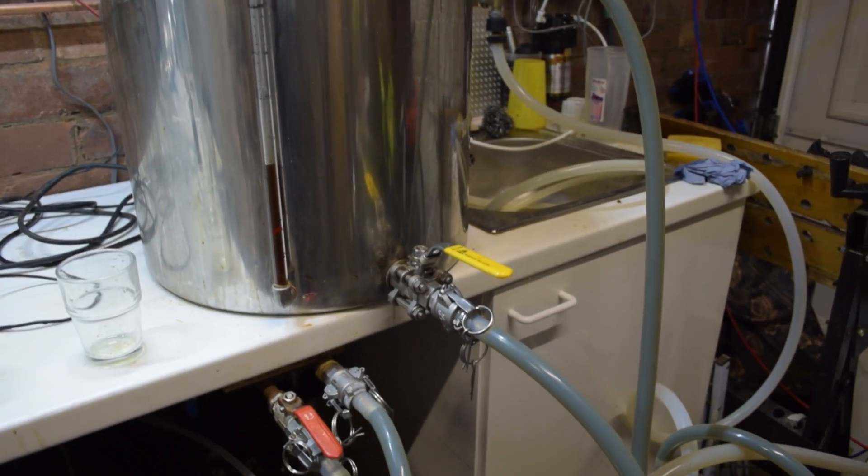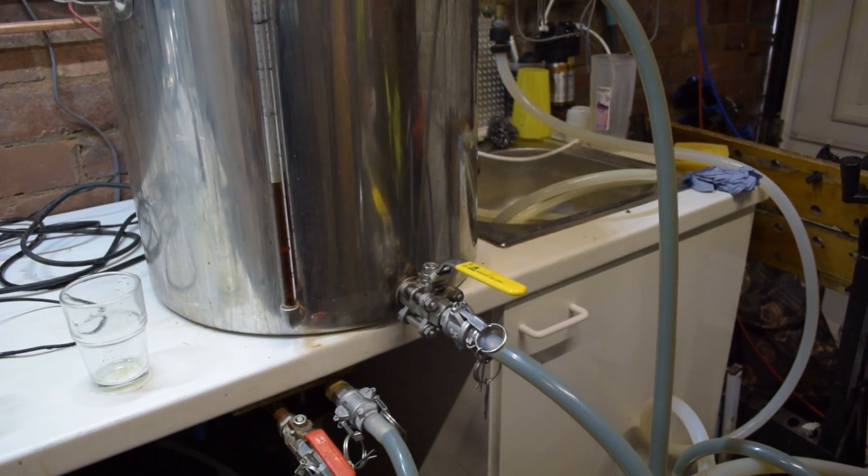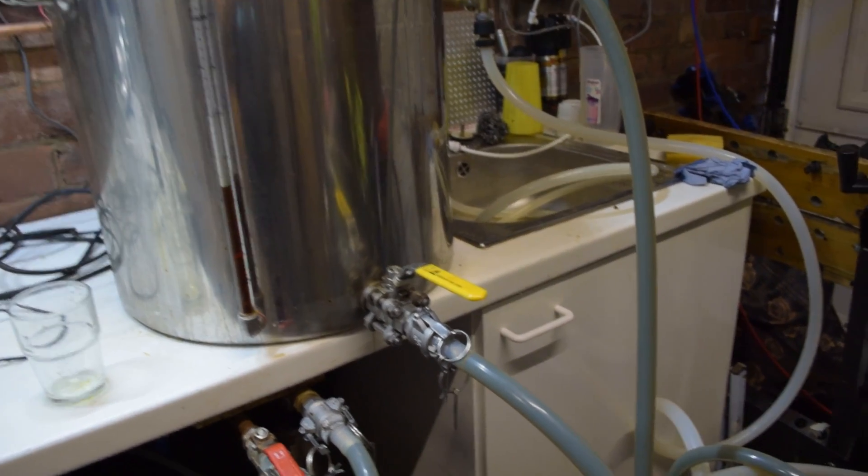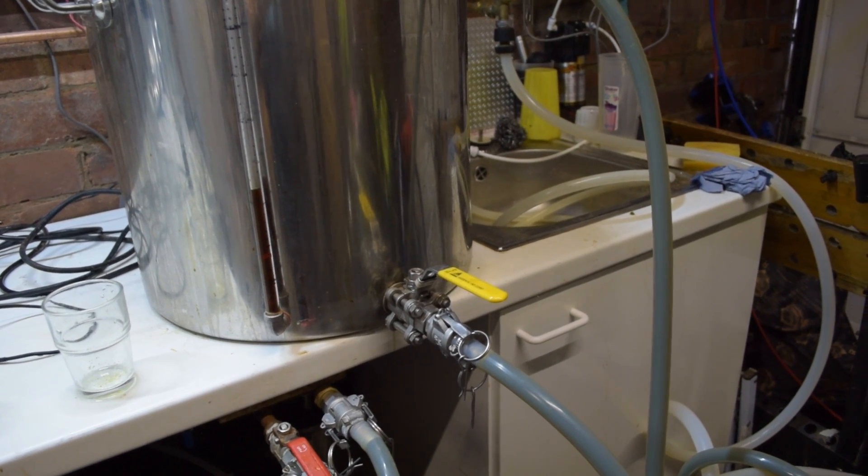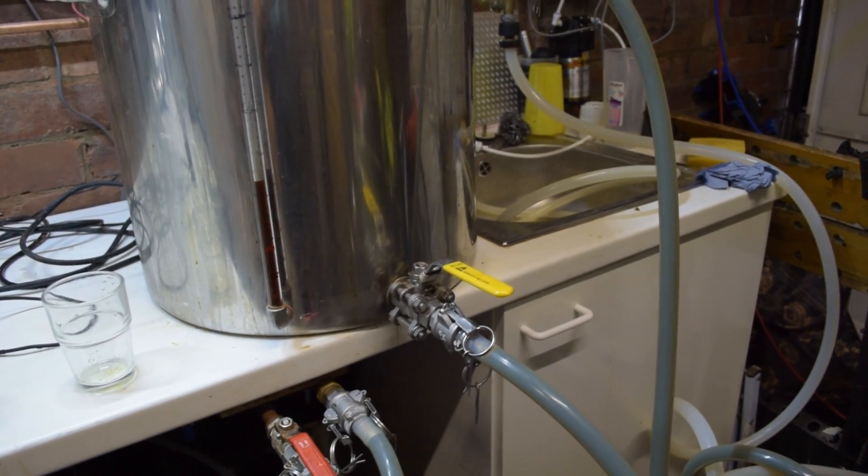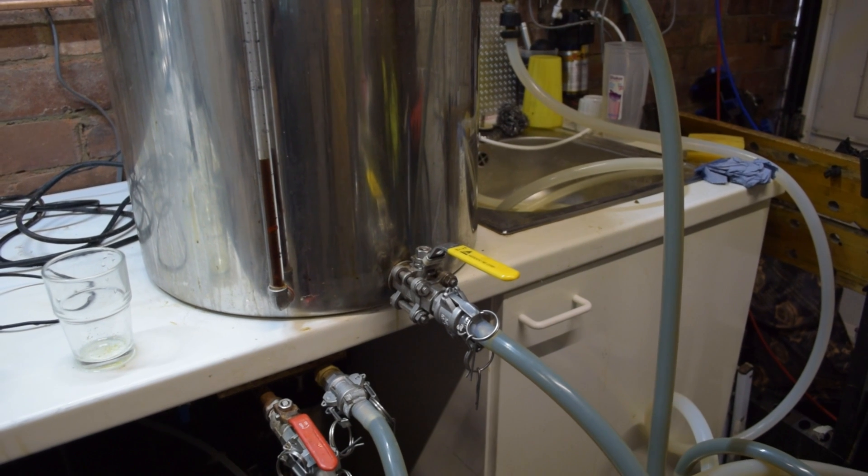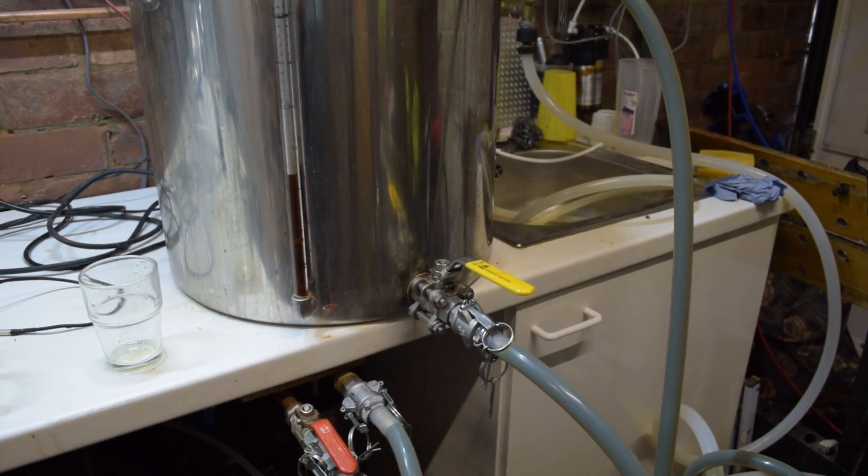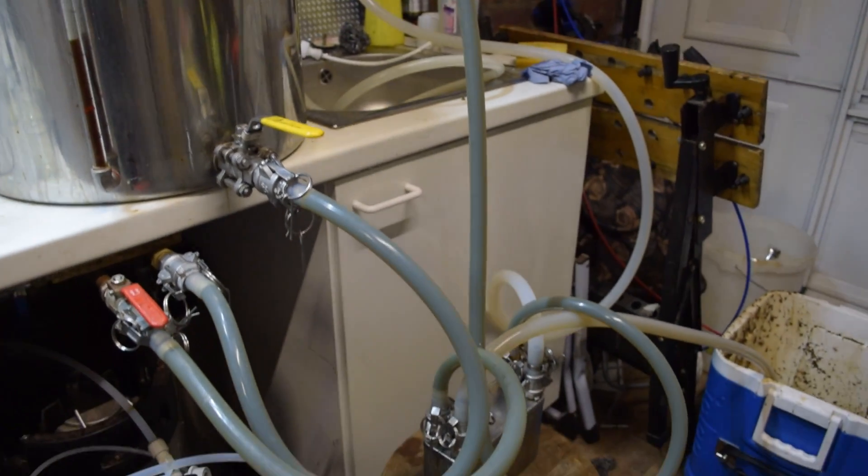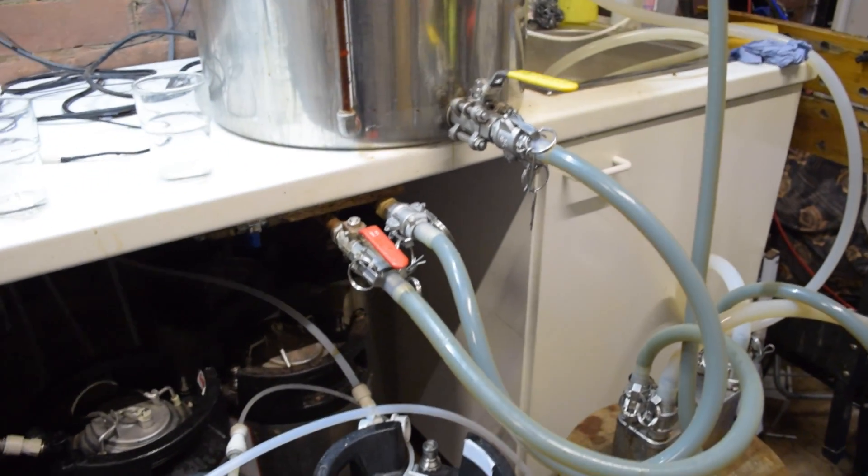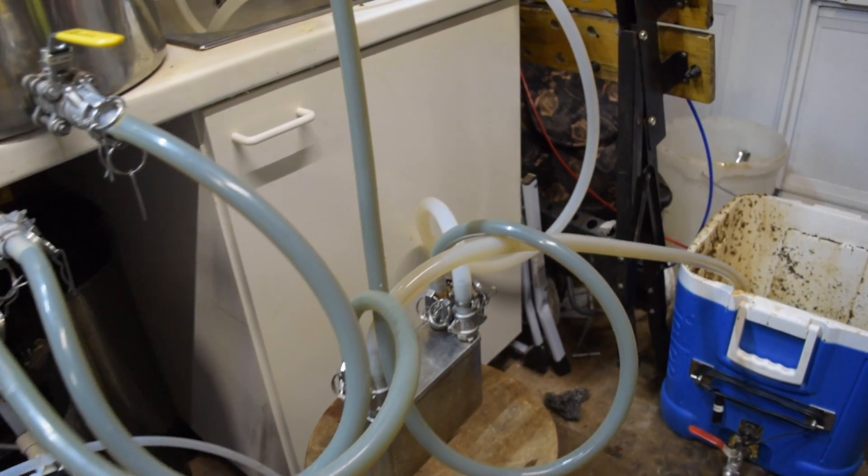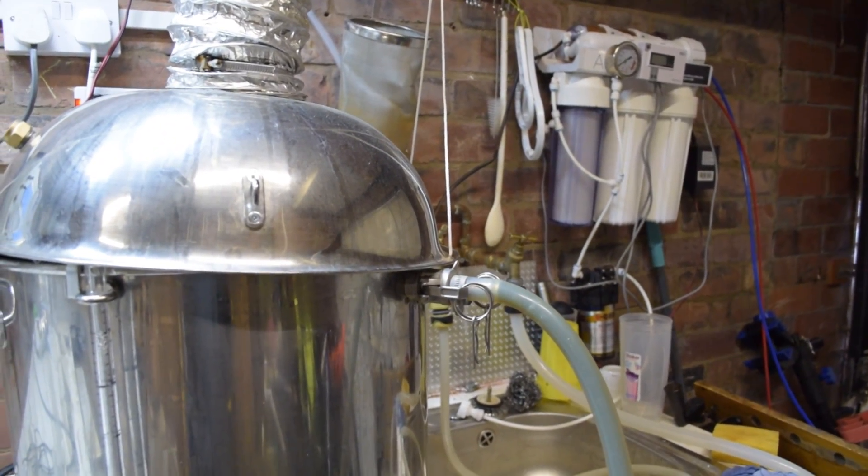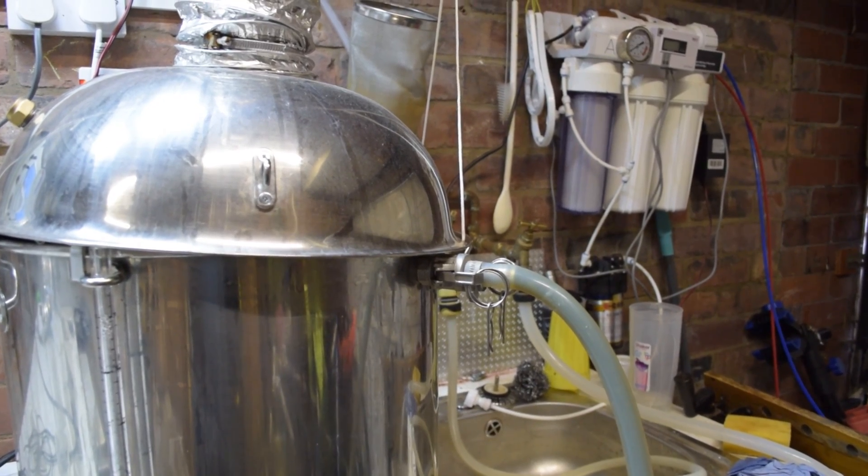And we're reaching the end of the boil, so I've now set up for recirculation, then cooling and whirlpool. So currently it's just running a whirlpool at boiling point to keep, well to make sure everything is clean and sterile, well sterile as much as possible. So the wort has been coming out of the boiler, through the pump, through the plate chiller and back in through the whirlpool connection.